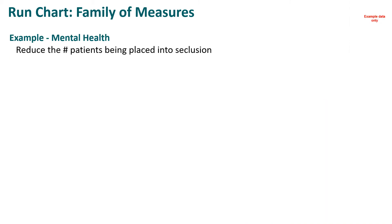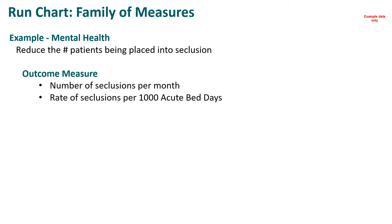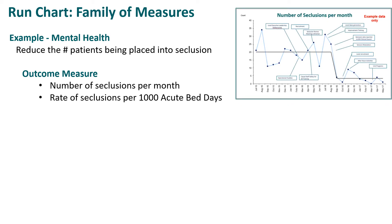We'll now look at a mental health quality improvement project to determine how they use the family of measures. The project was about reducing the number of patients placed into seclusion per month. The outcome measures were the number of seclusions per month, and they also measured the rate of seclusions per thousand acute bed days. Here's an example of a run chart looking at the number of seclusions per month, with the many PDSA cycles tried stated in the annotation boxes.